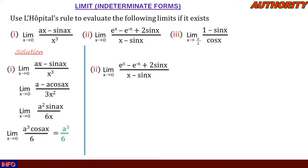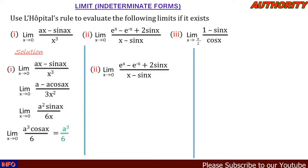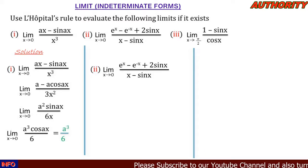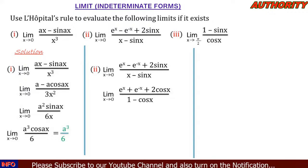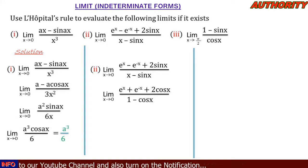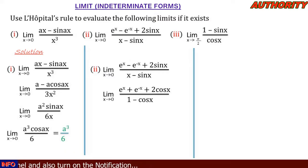For number two: lim as x approaches zero of (eˣ - e⁻ˣ + 2sin(x)) / (x - sin(x)). Plugging in zero gives us 0/0, so we differentiate. Differentiating the numerator gives eˣ + e⁻ˣ + 2cos(x), and the denominator gives 1 - cos(x). Plugging in zero again still gives us 0/0.